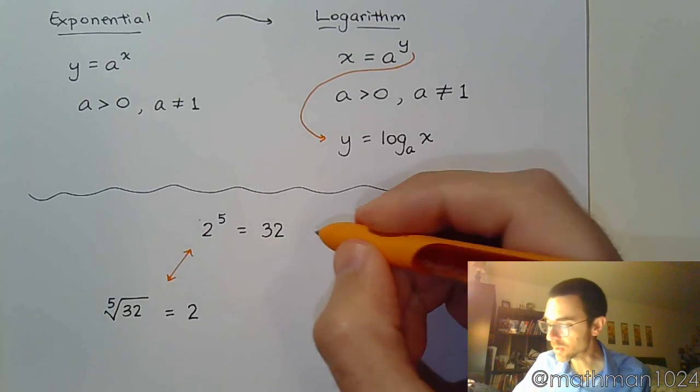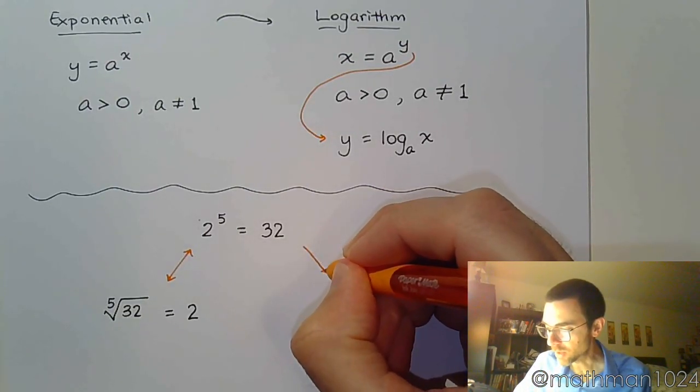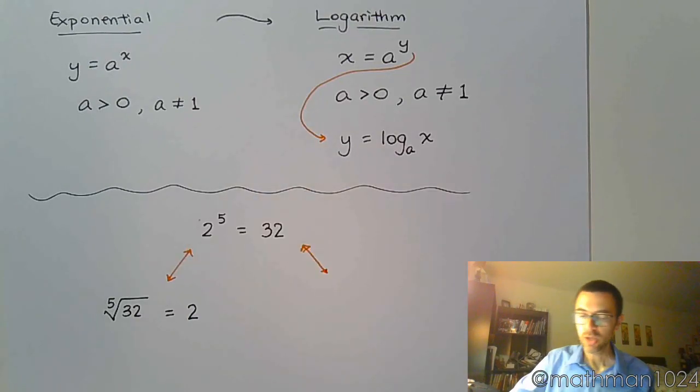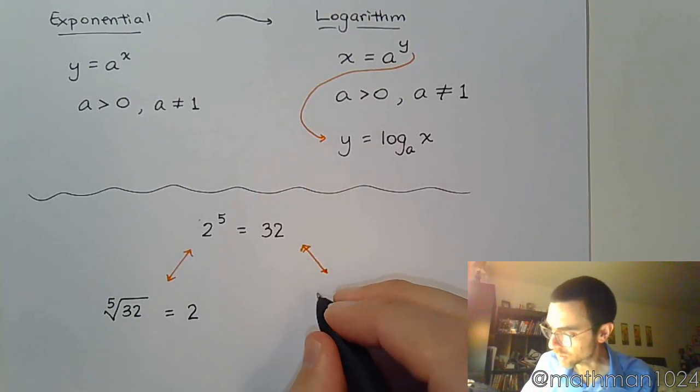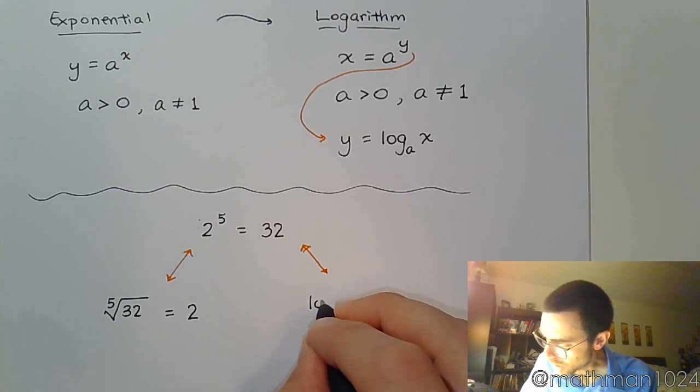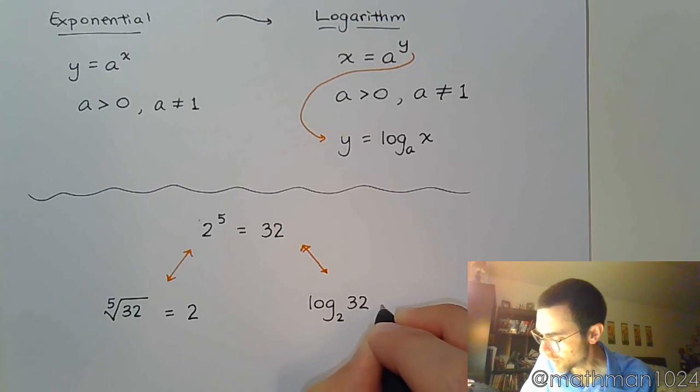When you're dealing with exponentials, you're looking for something else. So not exponential, but for a logarithm, excuse me, you're looking for something else. So a logarithm is going to ask this question: log base 2 of 32.